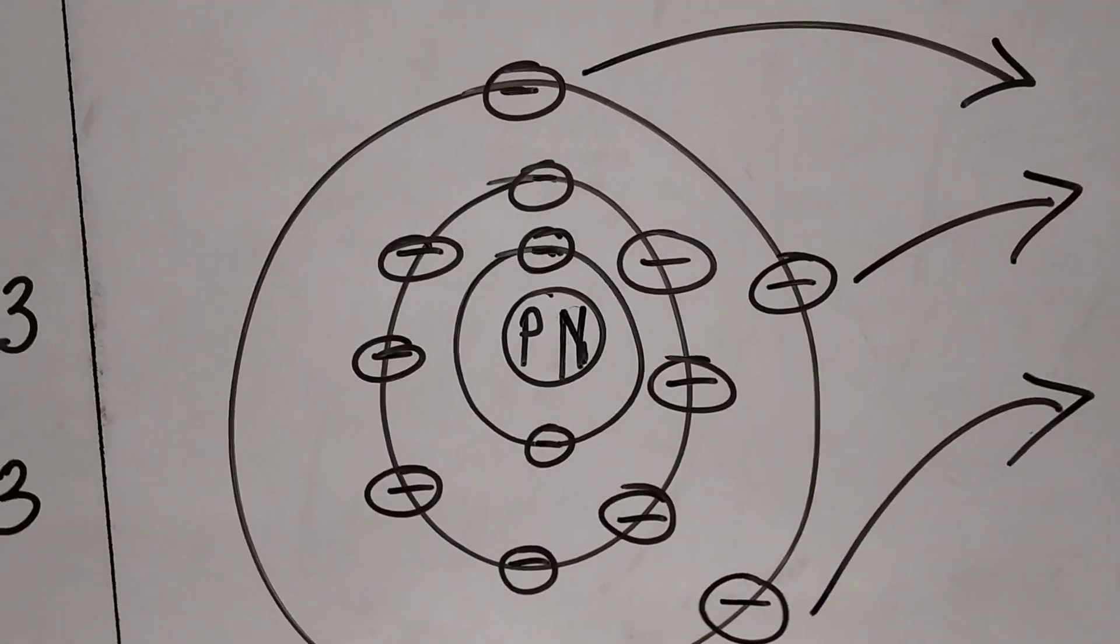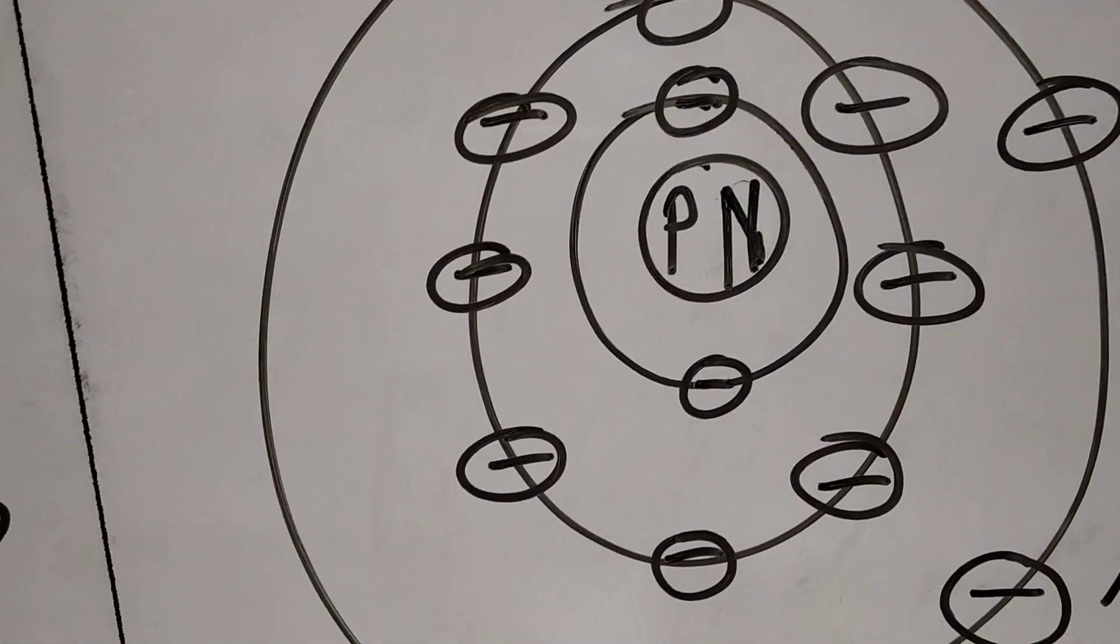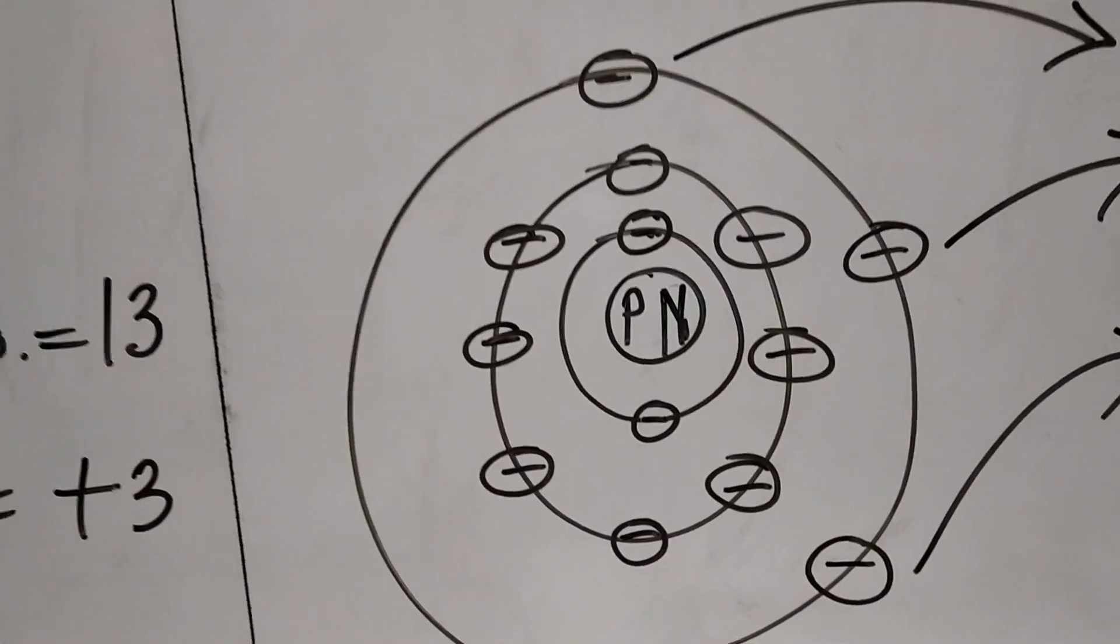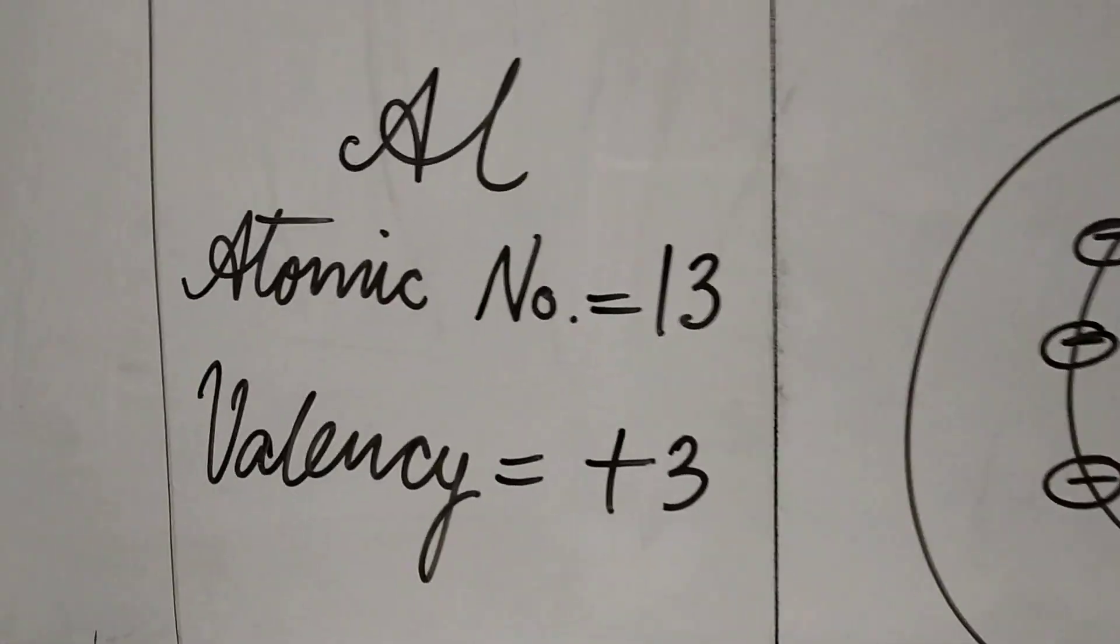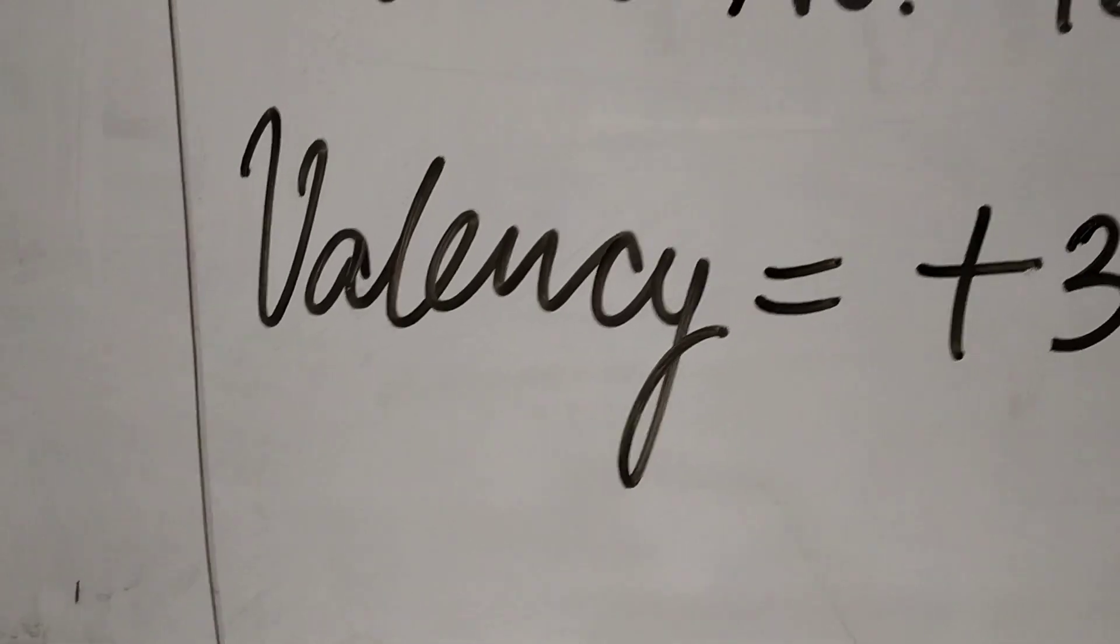Since three electrons are moving out, three protons are in excess, so the charge on the atom is positive in the ion, and so the valency is plus three.